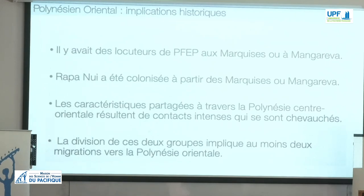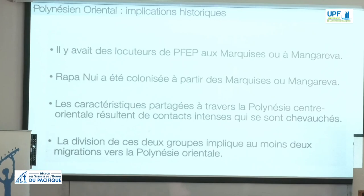So what does that imply about the Eastern Polynesian past? First, there were proto-Far Eastern Polynesian speakers in the Marquesas or in Mangerewa. Rapa Nui was settled from one or the other, meaning it was not in complete isolation — going against long-held theories in Eastern Polynesian evolution. Third, shared features among Common East Polynesian languages are the result of overlapping and intense contact spheres. These networks included the Marquesas and Mangerewa but not Rapa Nui. It also implies that there were at least two migrations into the Eastern Polynesian region, and potentially more.